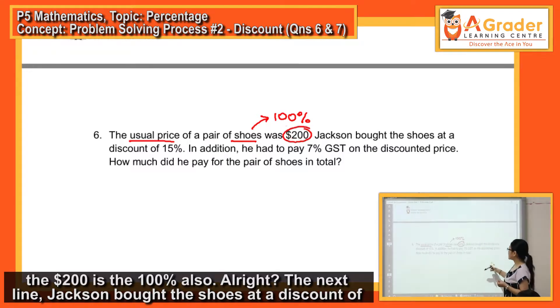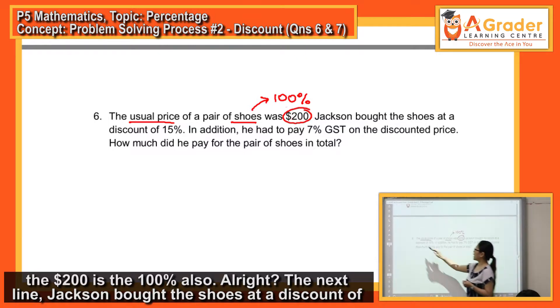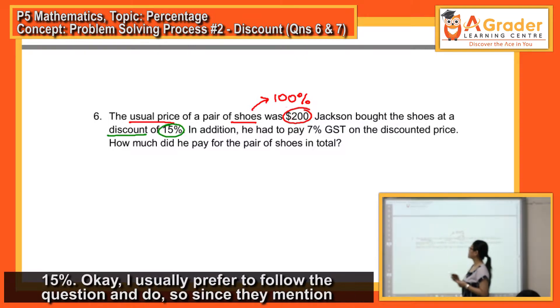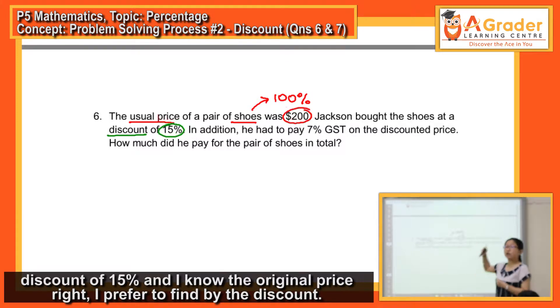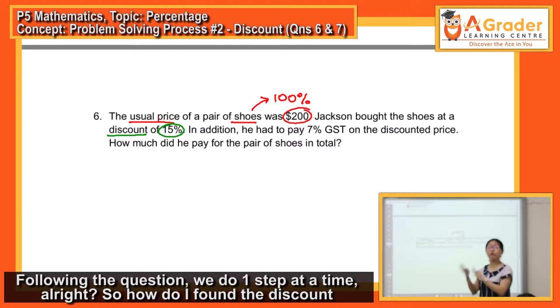The next line, Jackson bought the shoe at a discount of 15%. I usually prefer to follow the question and do. So, since they mention discount of 15% and I know the original price, I prefer to find by the discount. Following the question, we do one step at a time.